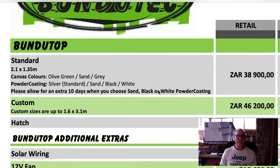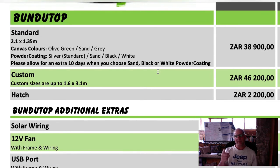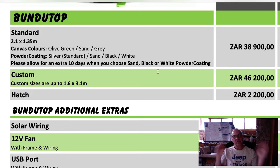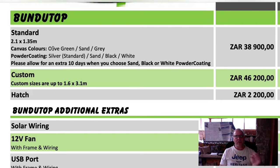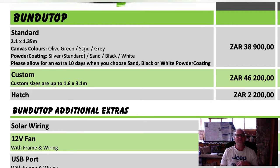The first thing is the normal Bundutop tent. The standard tent is 2.1 meters long and 1.35 meters wide. It's a nice large tent because the sides are vertical, not angled or sloped. It has nice big windows and it's a brilliant tent - I use it and love it. For canvas colors you can choose between olive green, which is the standard, or a sand color like the brown on Hiluxes and Land Cruisers, or gray.